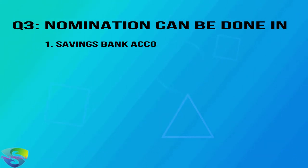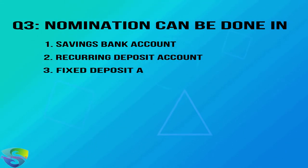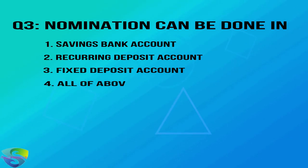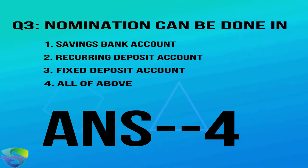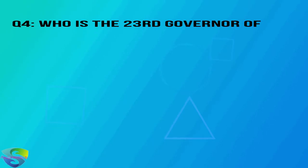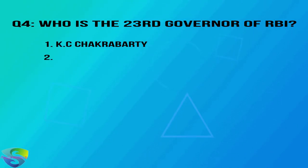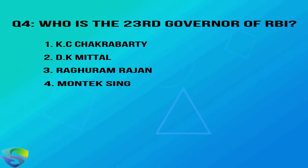Question three: nomination can be done in savings bank account, recurring deposit account, fixed deposit account, or all of the above? Answer is option 4: all of the above. Question four: who is the 23rd governor of RBI? Options: Casey Chakraborty, DK Mittal, Raghuram Rajan, or Montek Singh.